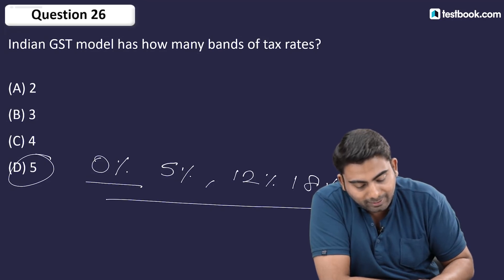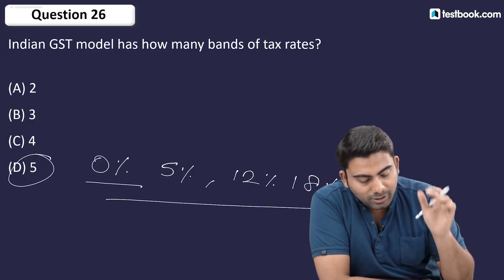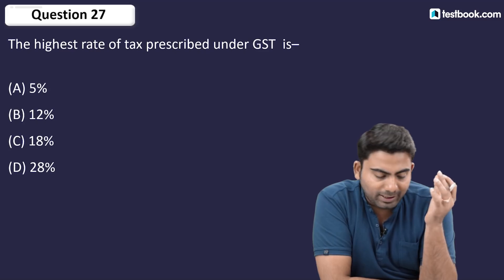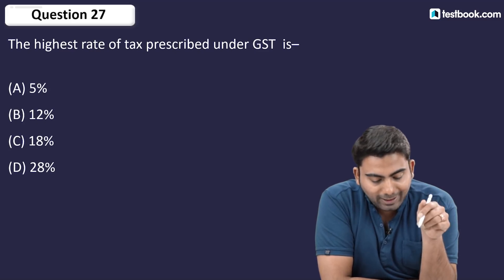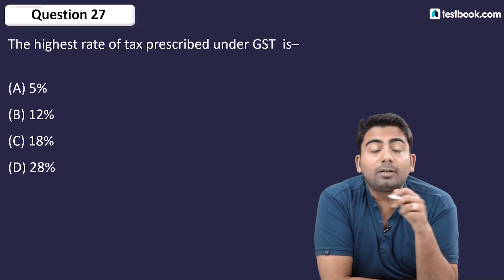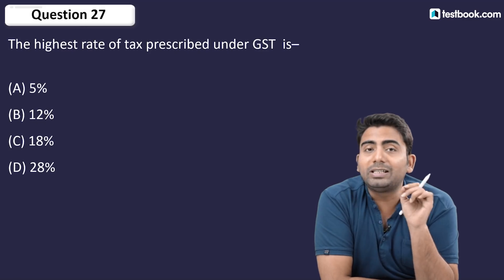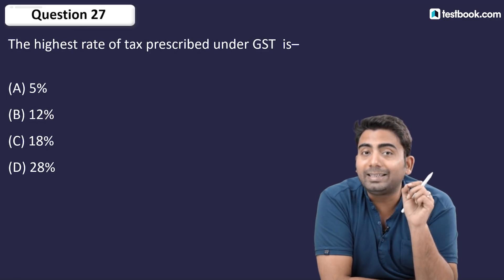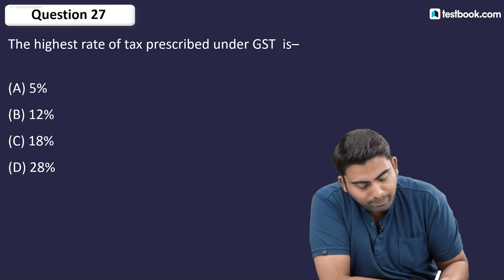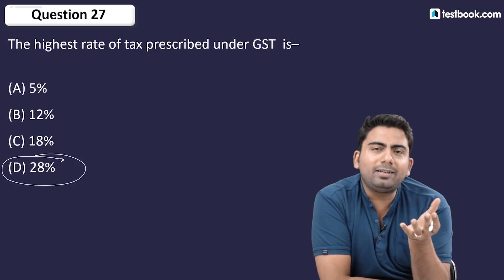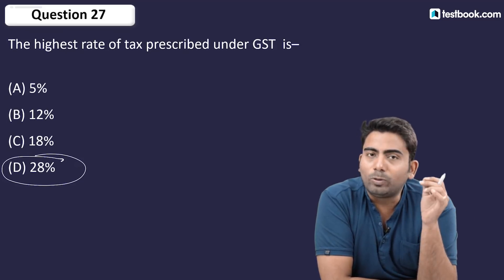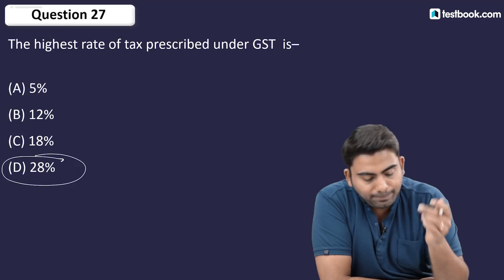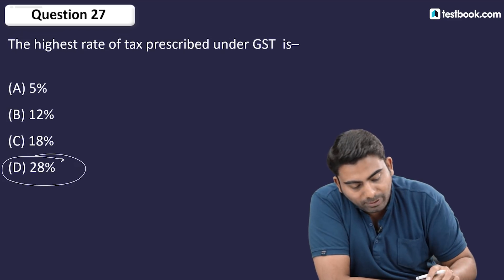Question number 27: The highest rate of tax prescribed under GST in India is? The answer is 28% — option D. If you have seen all the parts, no GST question should be difficult for you.